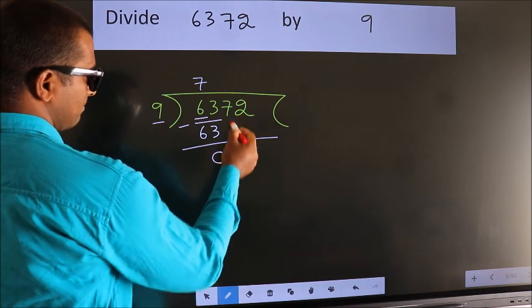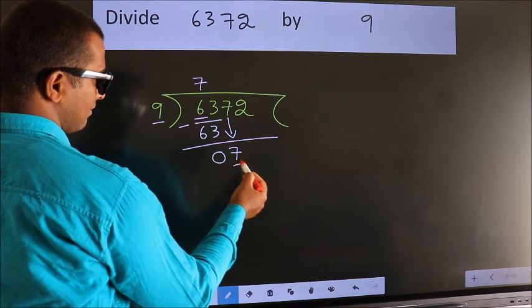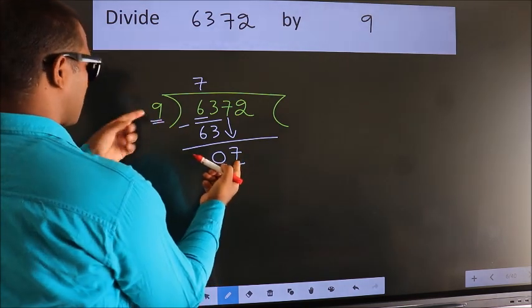After this, bring down the beside number. So, 7 down. Here we have 7. Here 9. 7 smaller than 9.